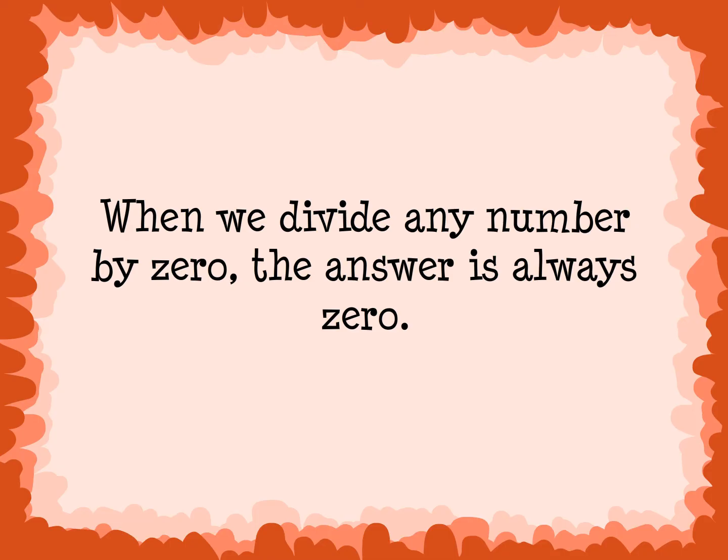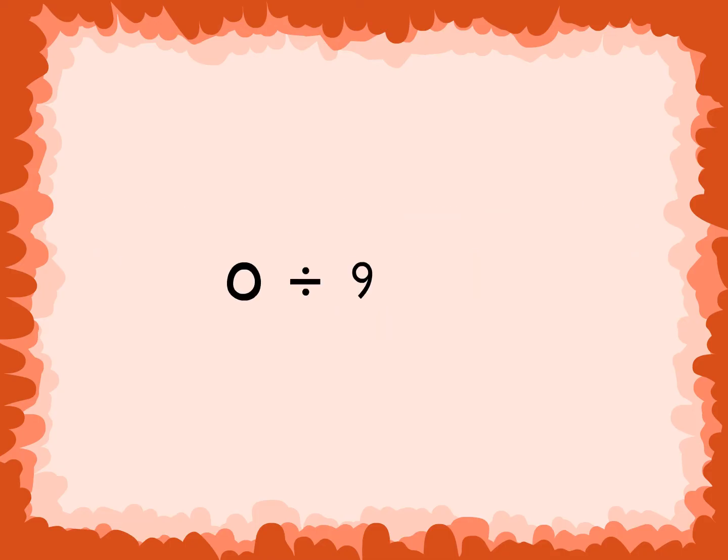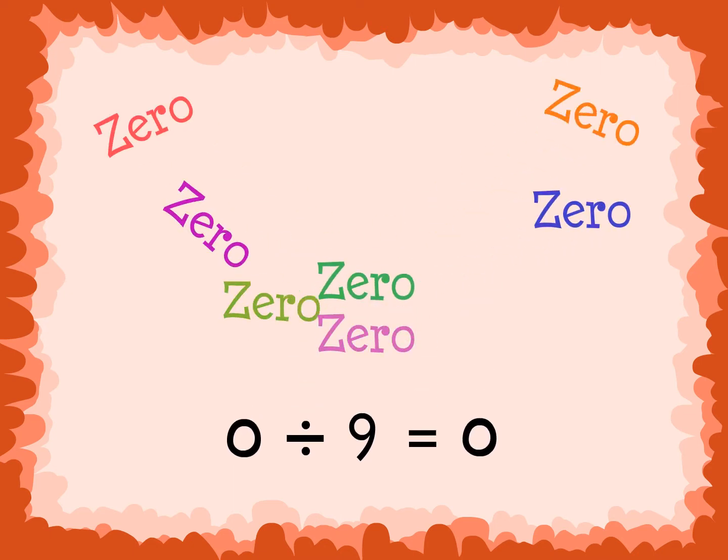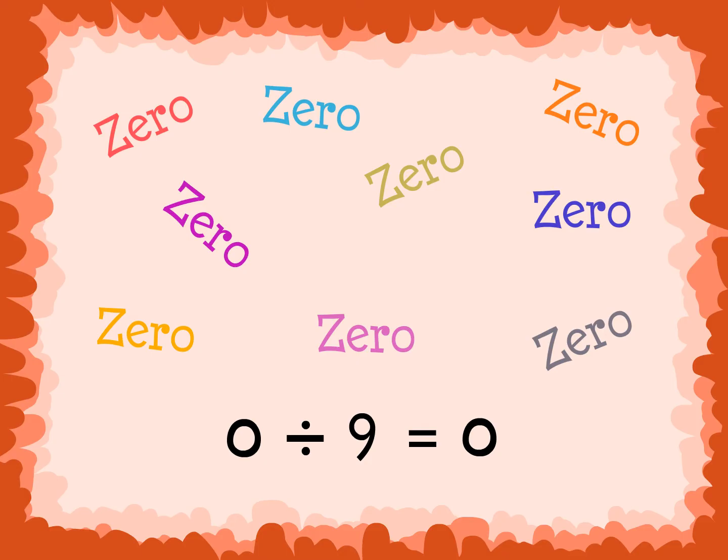When we divide any number by 0, the answer is always 0. 0 divided by 9 equals 0. There are 0 total objects to divide equally between 9 groups. Since there are 0 objects, the quotient must be 0.